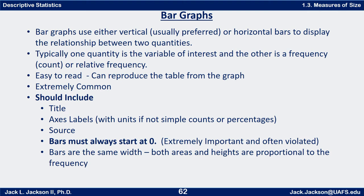Some things you should include: a title, axis labels with units unless they're just simple counts or percentages. You should indicate what your source is, and the bars must always start at zero and have the same width. These last two things are extremely important. If the bars start at zero and have the same width, then both the areas and the heights are proportional to the frequency, and also proportional to relative frequency.